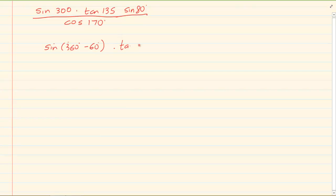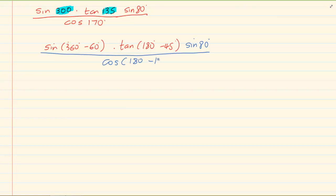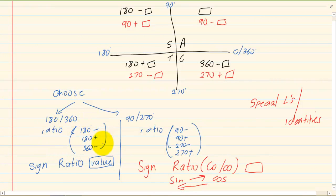So we have sin equal to 360 minus 60. Then we have tan which is 180 minus 45. Now how am I getting these values? 360 minus 60 is going to give me 300, which is what I want. 180 minus 45 is going to give me 135. Then sin 80 — I leave it alone, it is in the first quadrant, we don't fiddle unless we have a problem later. Cos is in the second quadrant, so I am going to have cos 180 minus 10. So we first chose what we are doing and rewrote them into our ratios. Now let's go for reduction.